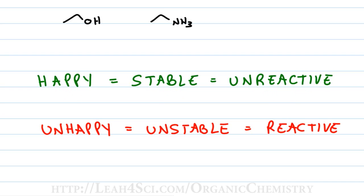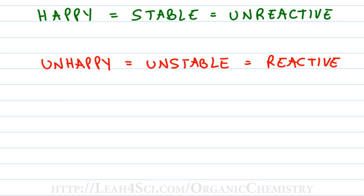Acids and bases work the same exact way. Say we have a generic acid HA that breaks up to give H+ and A minus. H+ is a proton — we're not going to focus on that. The flaw in most textbooks is they always talk about the proton and how easily it wants to leave. Forget the proton — what we're looking at is everything around the proton: the molecule's desire to grab that proton, its ability to give it up. Look at everything else.